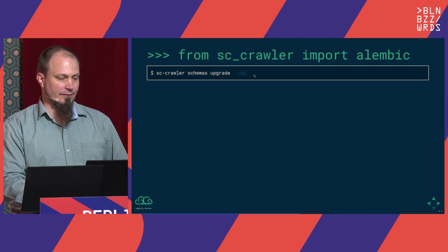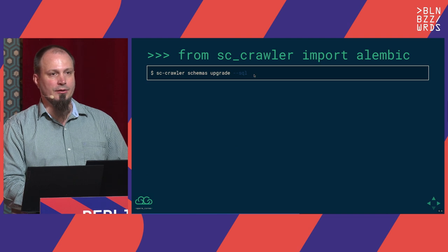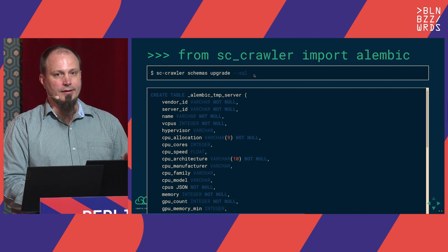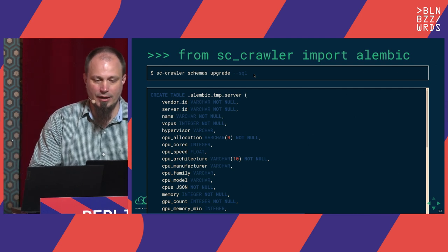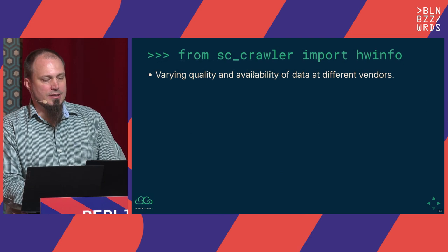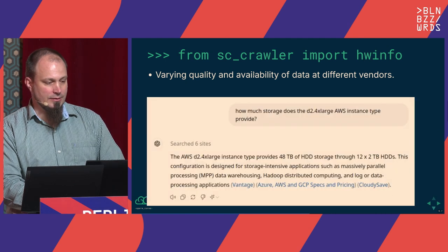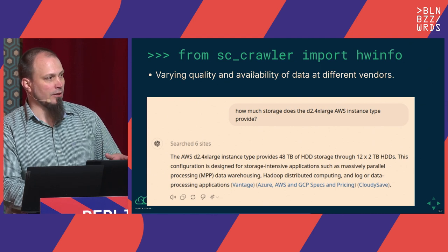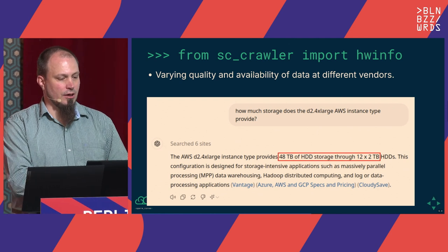But on the user side it's relatively straightforward — you run schema upgrade on your database and you're up to the most recent version of the crawler database, whether using SQLite, Postgres, or any other database engine. As I mentioned, there's very varying quality and even availability of data points at different vendors. And before you ask if ChatGPT can provide that information — honestly, SpareCourse is safe from AI taking its job.